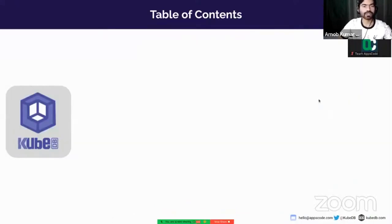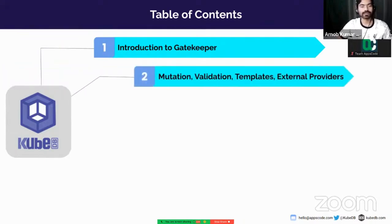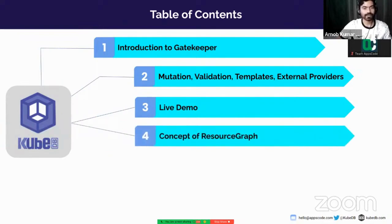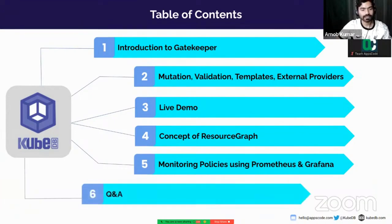Today I'm going to cover these contents. Firstly, I'll introduce you to the policy management tool Gatekeeper. Then I'm going to describe the CRDs of Gatekeeper like mutation, validation templates, and external providers. Then I'll give a live demo about the Gatekeeper integration. Number four, I'm going to explain the concept of resource graph and how we're going to utilize it in our integration. And then monitoring — how to monitor policies using Prometheus and Grafana. And lastly, there will be a Q&A session.